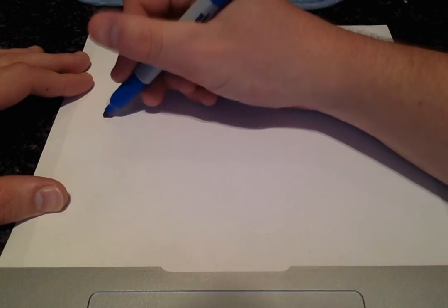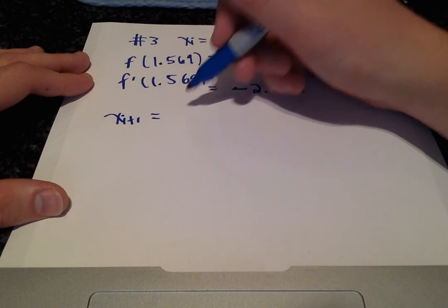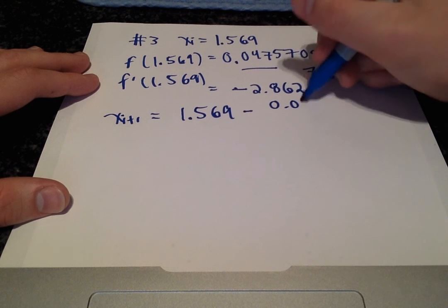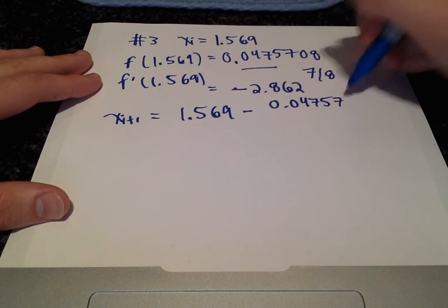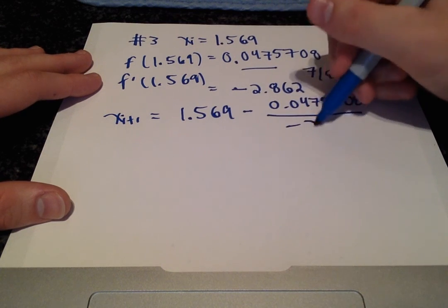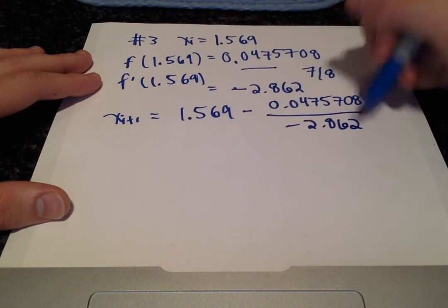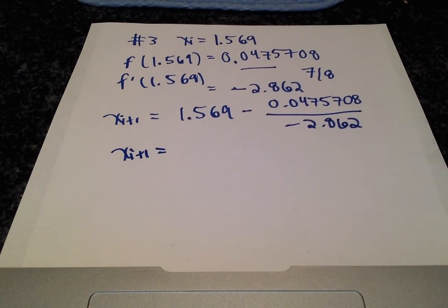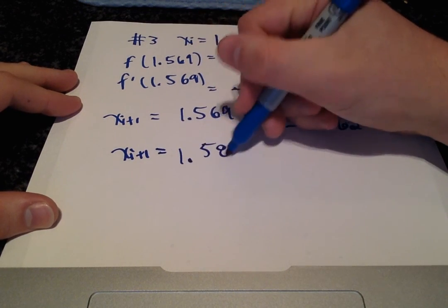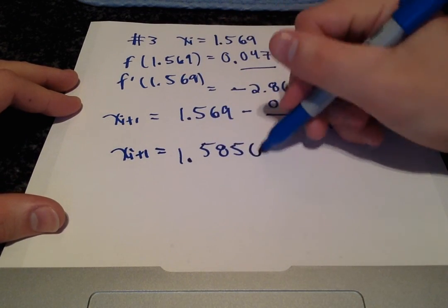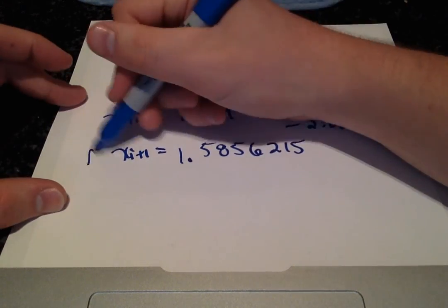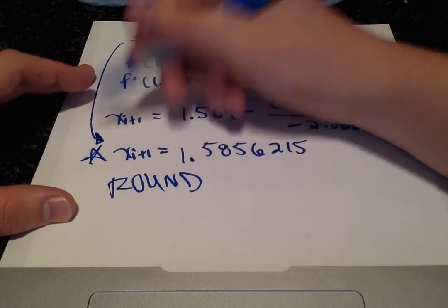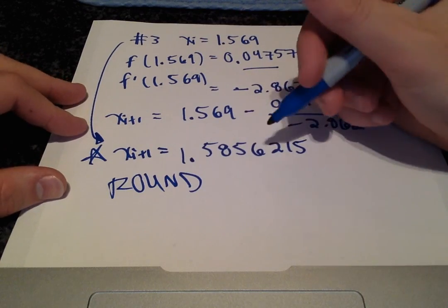Okay and when we calculate x sub i plus 1 we get 1.569 minus 0.0475708 over negative 2.862 and we are still not rounding, keeping as many decimal places as we can. 1.5856215 and this is our indication to round. We got to the end of our third iteration.